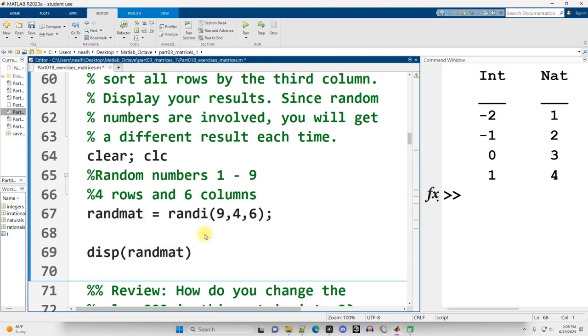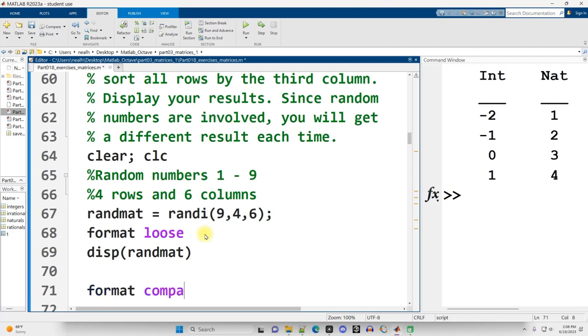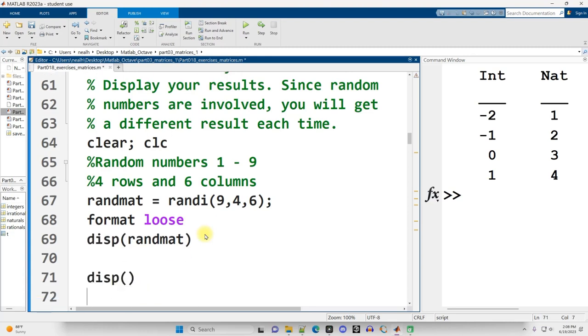In fact, this is also a good place to briefly change my format to double-spaced. And then just at the end of this section, I'll just convert it back to single-spaced. So format loose for double-spacing. I'll display out the matrix. And then I want to sort the matrix and display that out. So I'll display out the sorted matrix.